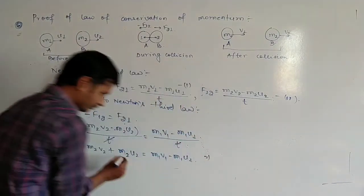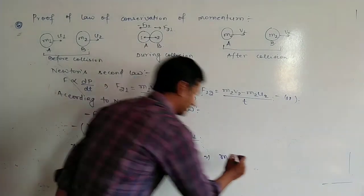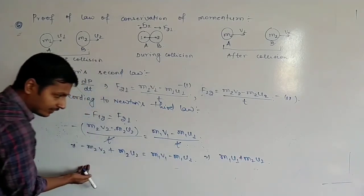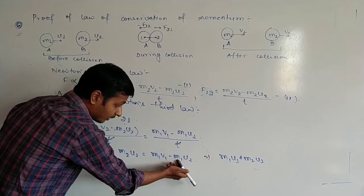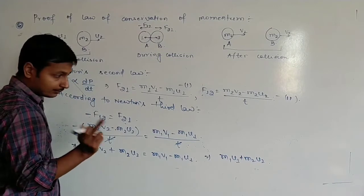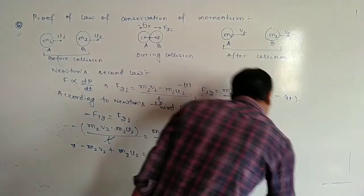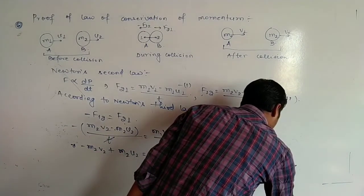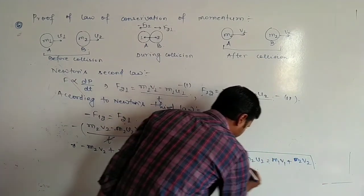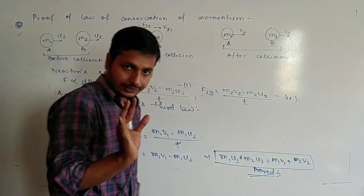After changing this sign you will get m1u1 plus m2u2. If you move to the left side, then the sign will change. It becomes m1v1 plus m2v2. This is the proved conservation of momentum.